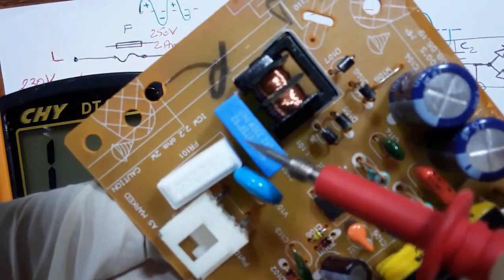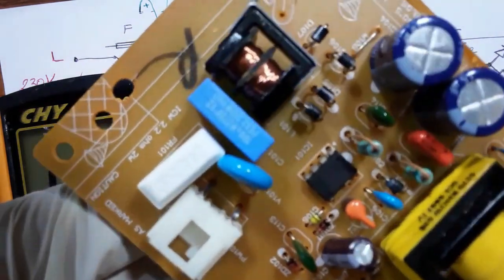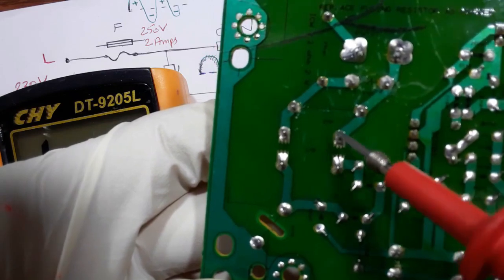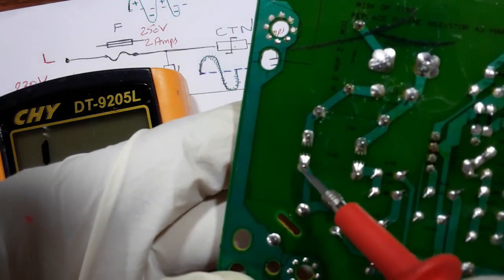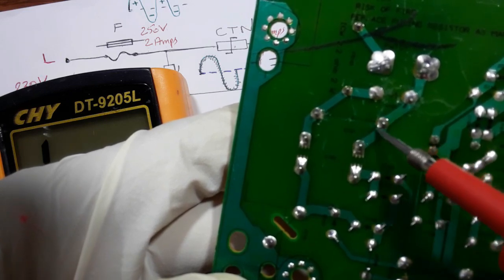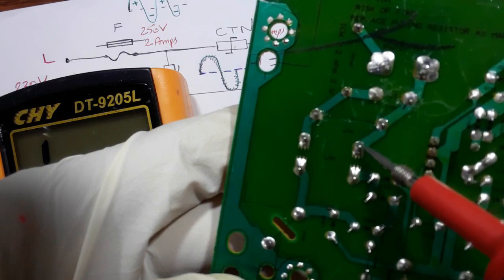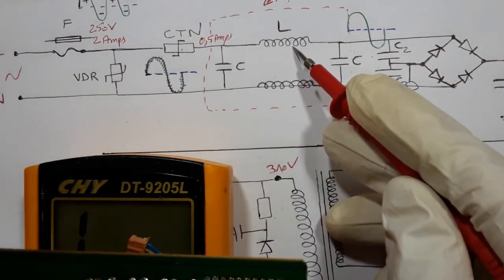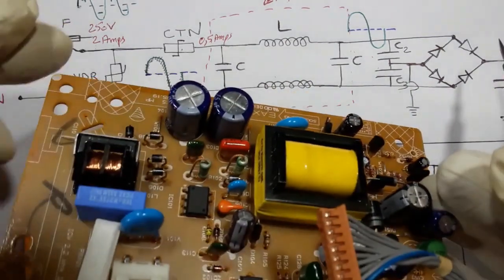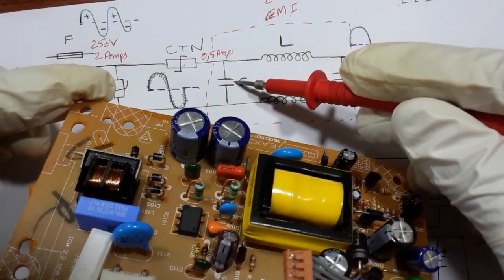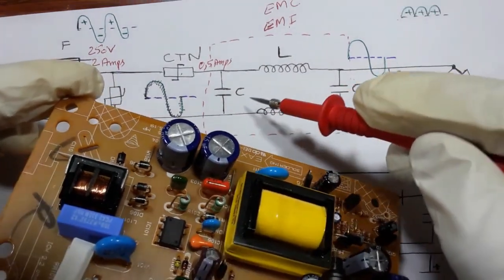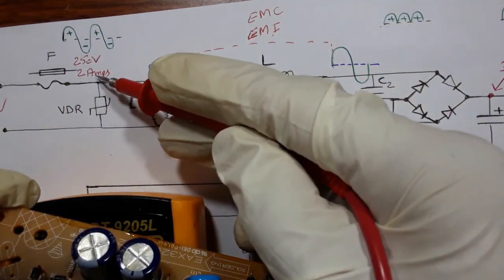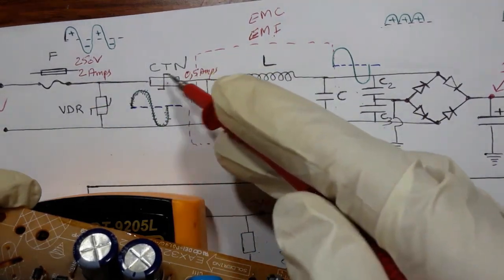Now let's look at the electromagnetic interference filter. This is the first coil and this is the second coil. The terminals of this capacitor are connected to the first coil and to the second coil as shown in the schematic. The varistor is connected to the fuse. Note that in this board we don't have the X-class capacitor.